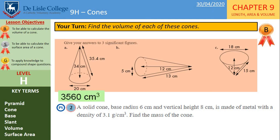Let's check answers. Question A is 3560 centimeters cubed. Notice you are asked to give the answers all to three significant figures. B is 314 centimeters cubed. And C, 1020 centimeters cubed.